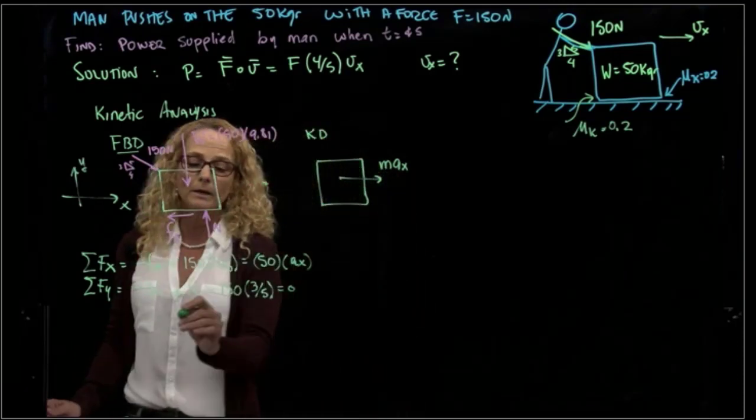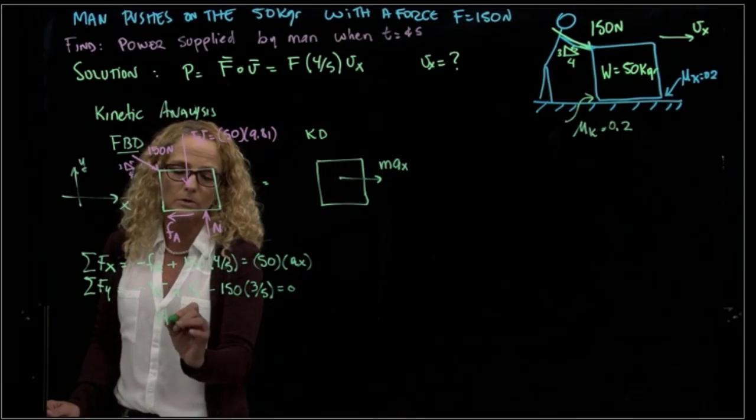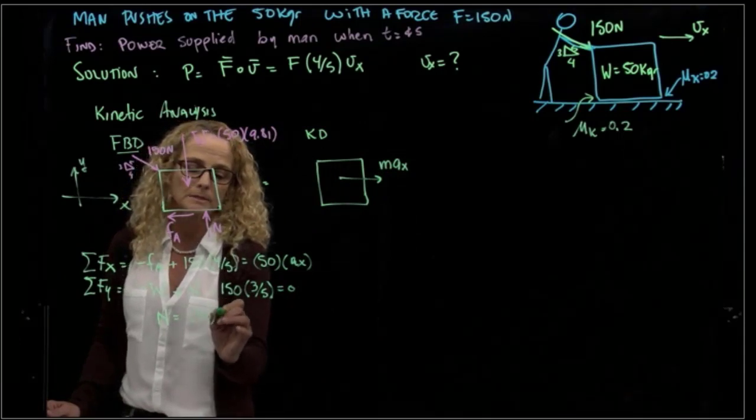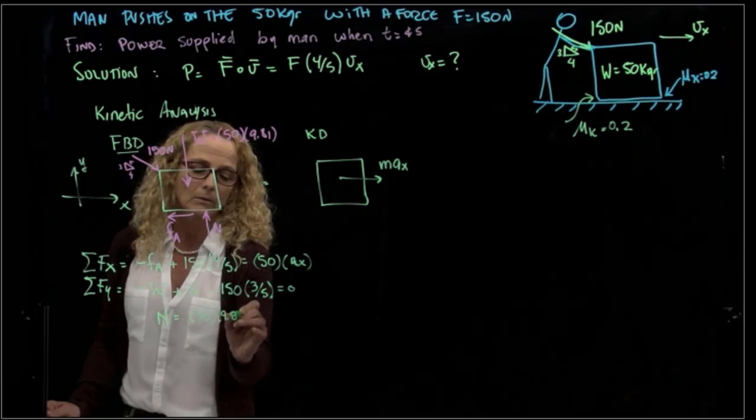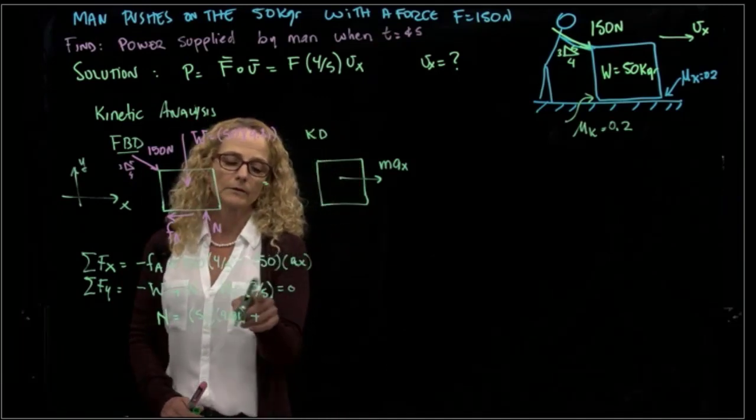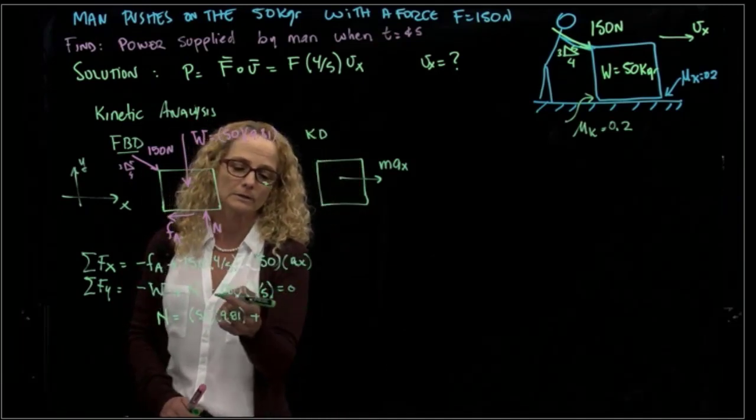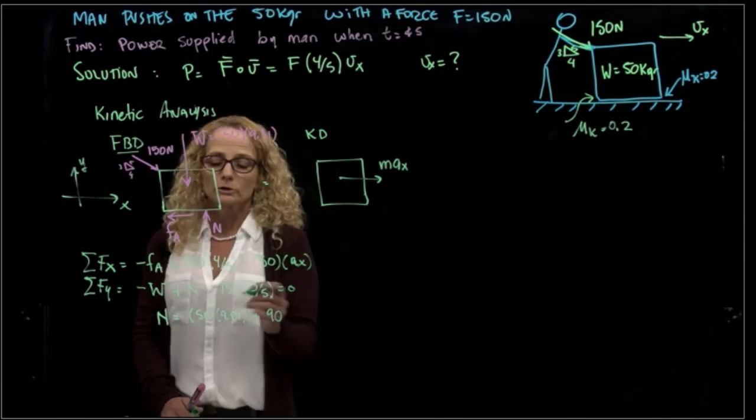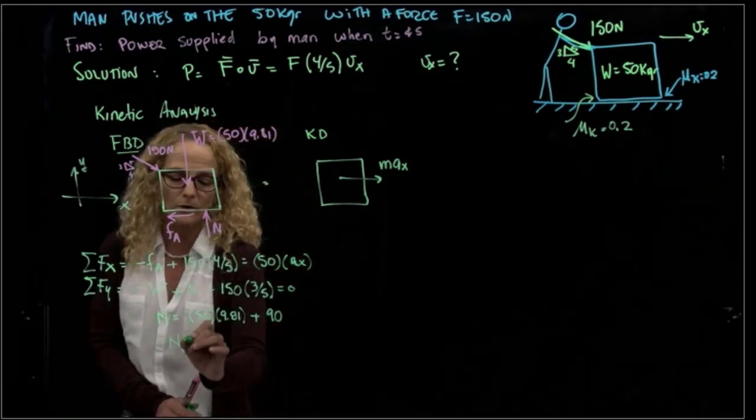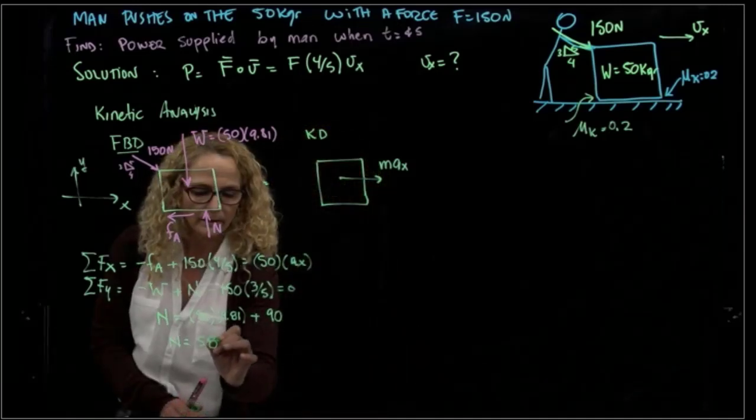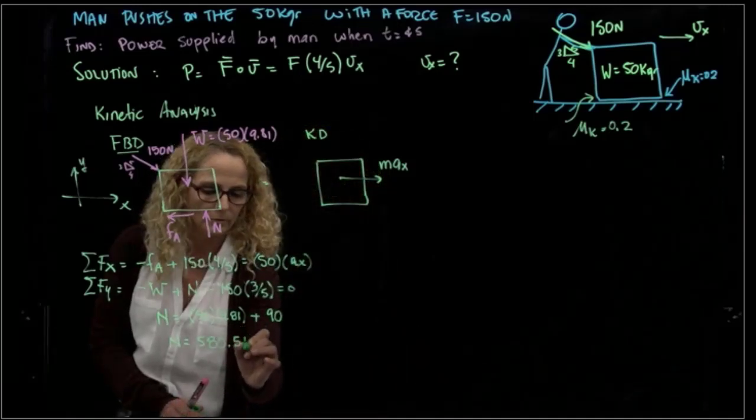From here, we can find that the normal force is equal to the weight, which is 50 times 9.81, plus 150 times 3/5, which is 30 times 3 is 90. We know that our normal force is equal to 580.5 newtons.